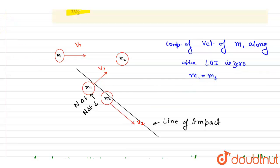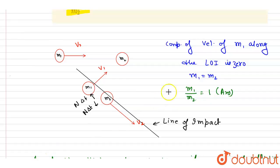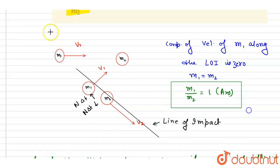Here, the exchange took place because before the collision, along the line of impact m2 was not having any velocity, and after the collision it has a velocity but m1 does not. So the velocity exchange took place, meaning m1 equals m2. Therefore m1 by m2 is equal to 1. This is the answer. Simple — thank you.